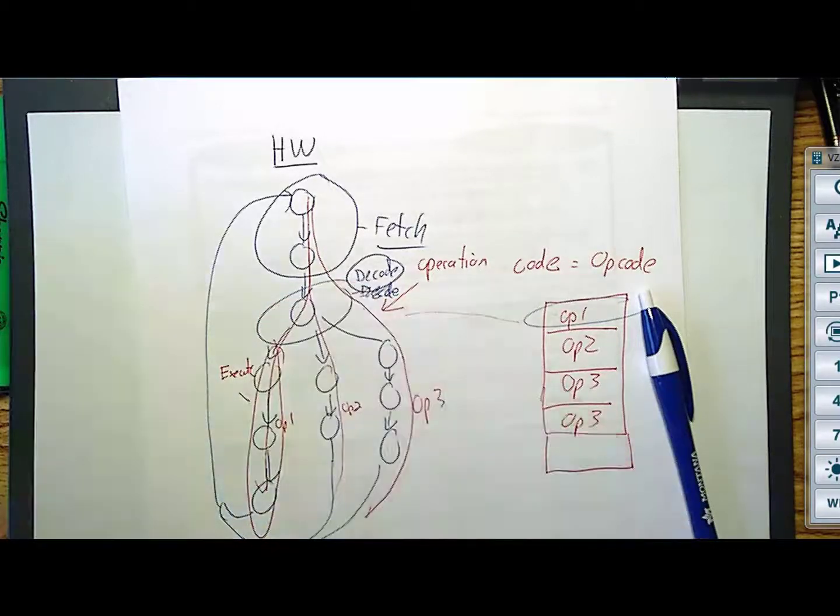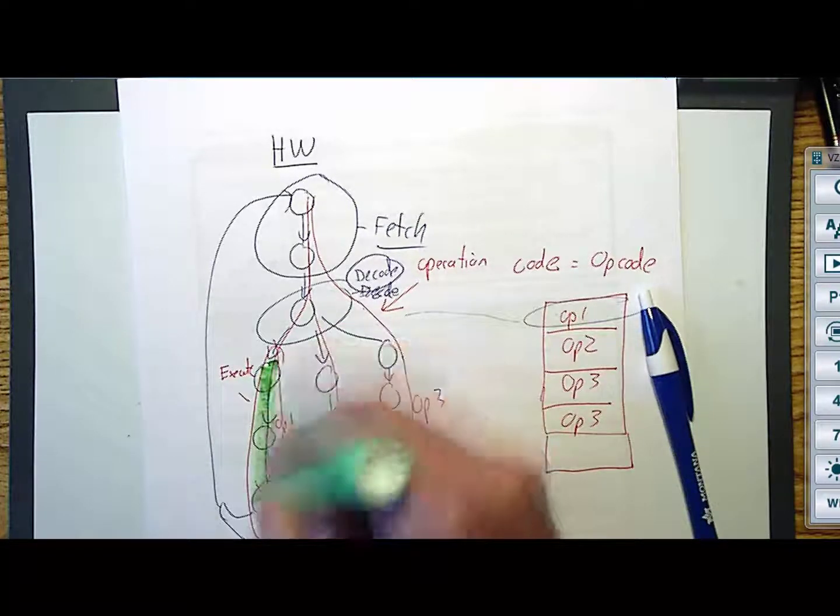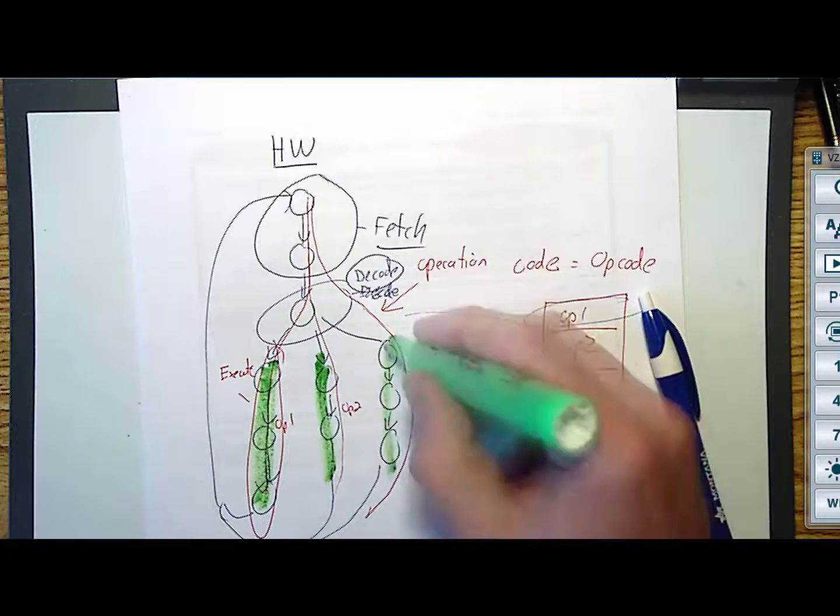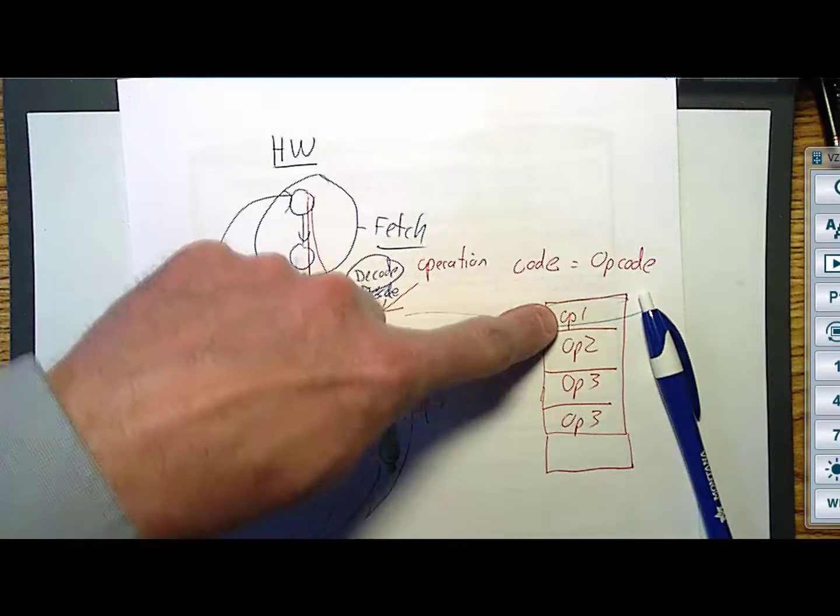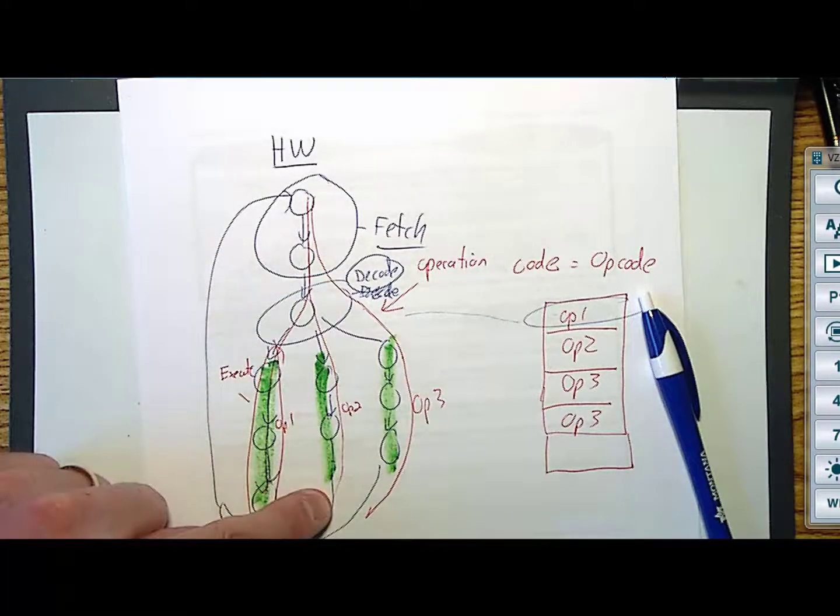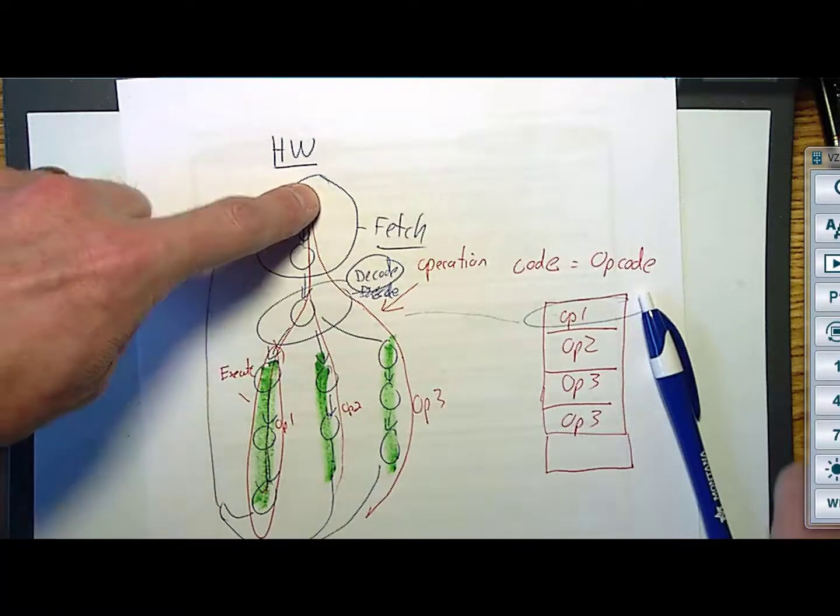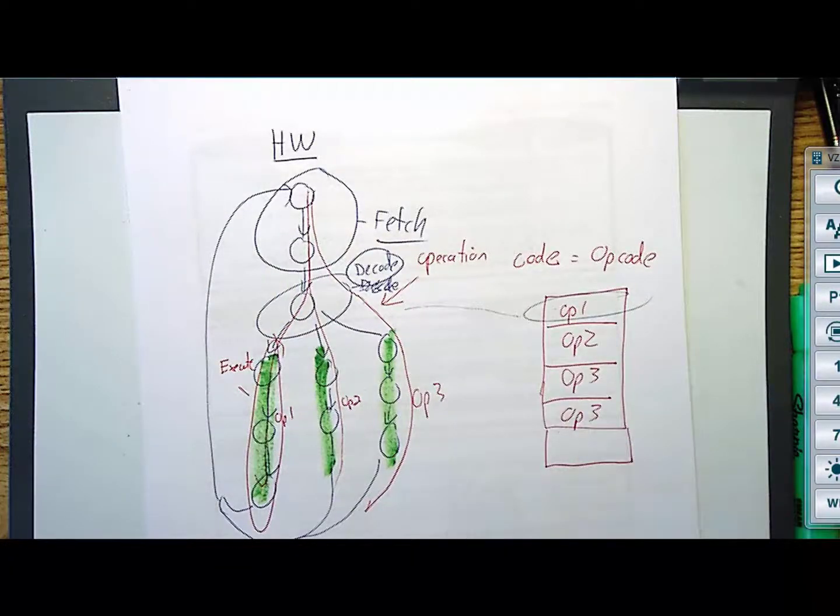And the execute's different. For opcode one, the execute states were those. For opcode two, they were these. For opcode three, they were these. And what we got to do is we just have to build this hardware so that it can automatically go out, grab an opcode, decode it, do its execution, and then go back and do it again.